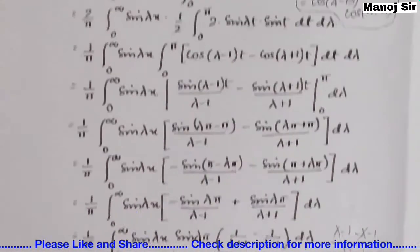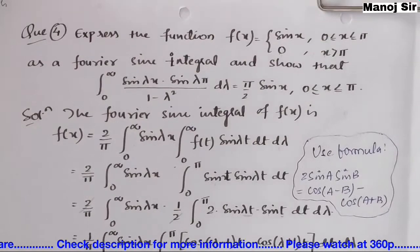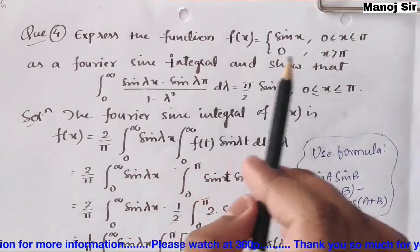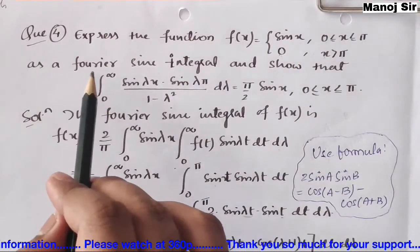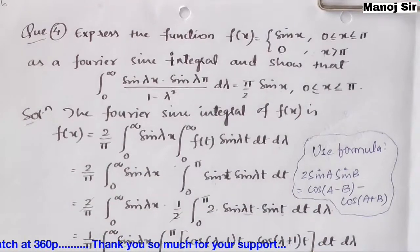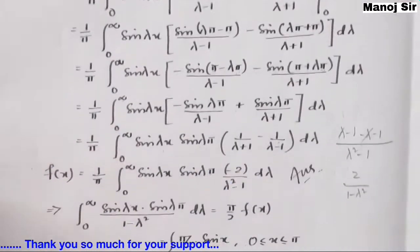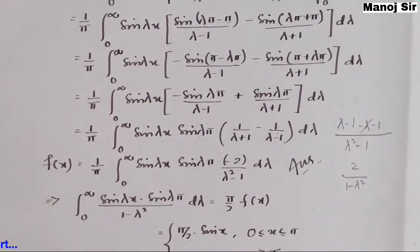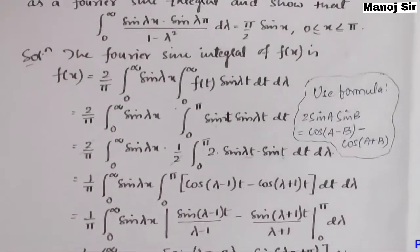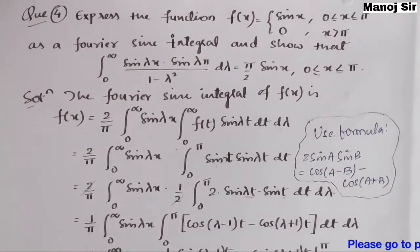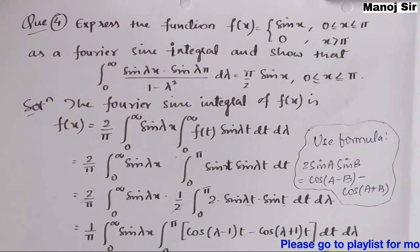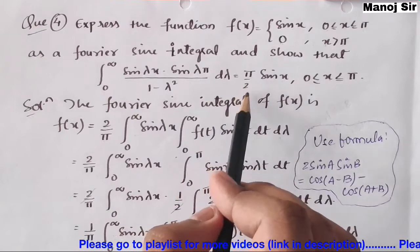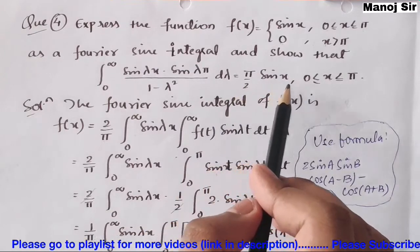This completes the first part of the question — expressing f(x) as a Fourier sine integral. The result is f(x) = (1/π) ∫₀^∞ sin(λx) sin(λπ) · [2 / (1 − λ²)] dλ.